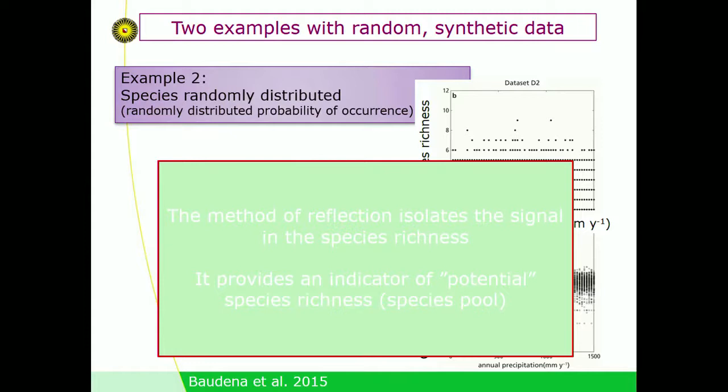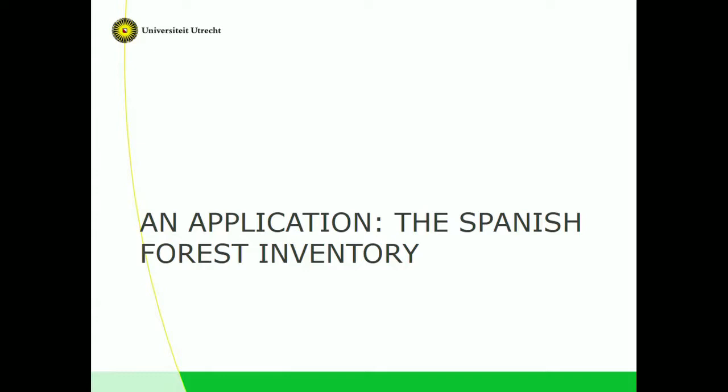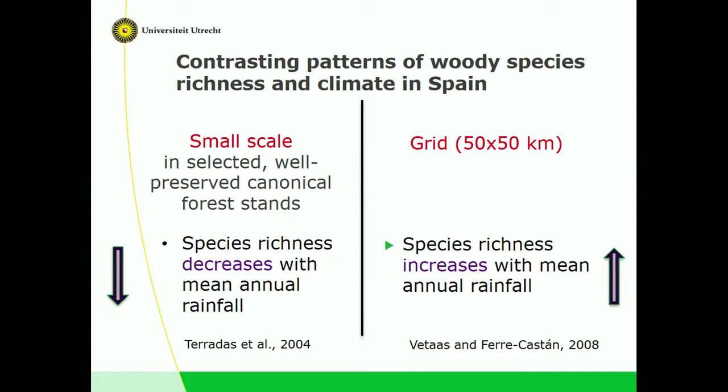We used the Spanish forest inventory to study woody species richness in Spain. A contrast existed: Terradas and Coder studied small-scale, well-preserved forest stands and found species richness decreasing with mean annual rainfall. While a study using data at 50x50 km scale found species richness was actually increasing with mean annual rainfall.